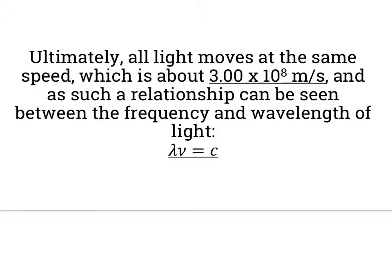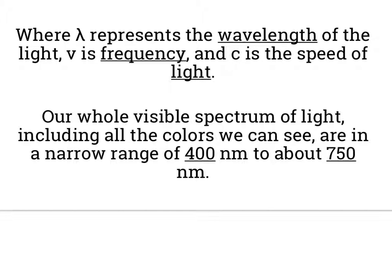Ultimately, all light moves at the same speed, about 3 times 10 to the 8th meters per second. And as such, we have a relationship that we can see between our frequency and our wavelength: lambda nu equals C, our speed of light, where lambda represents the wavelength, nu is our frequency, and C is the speed of light.